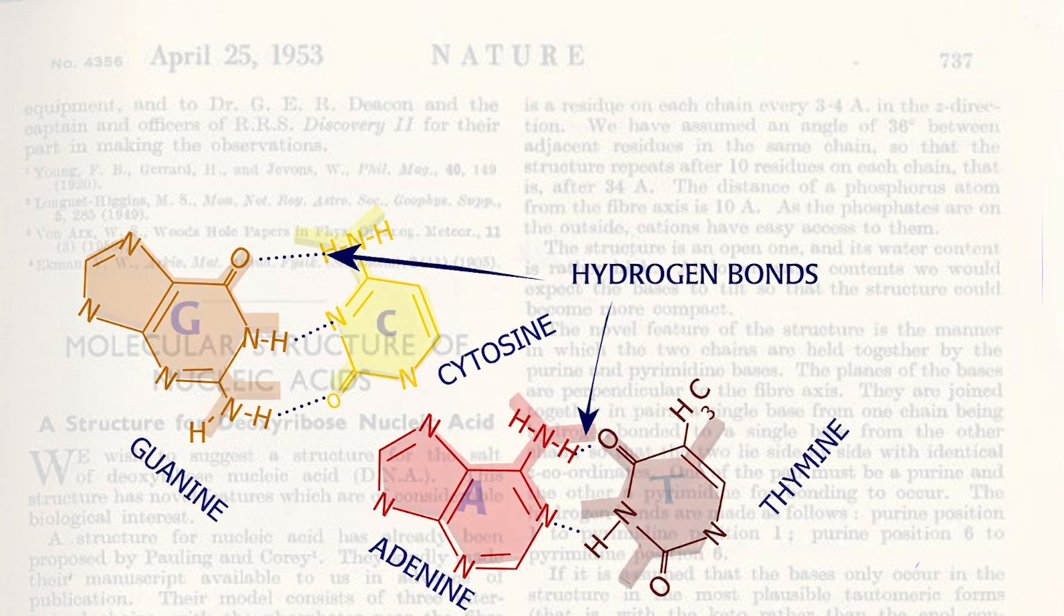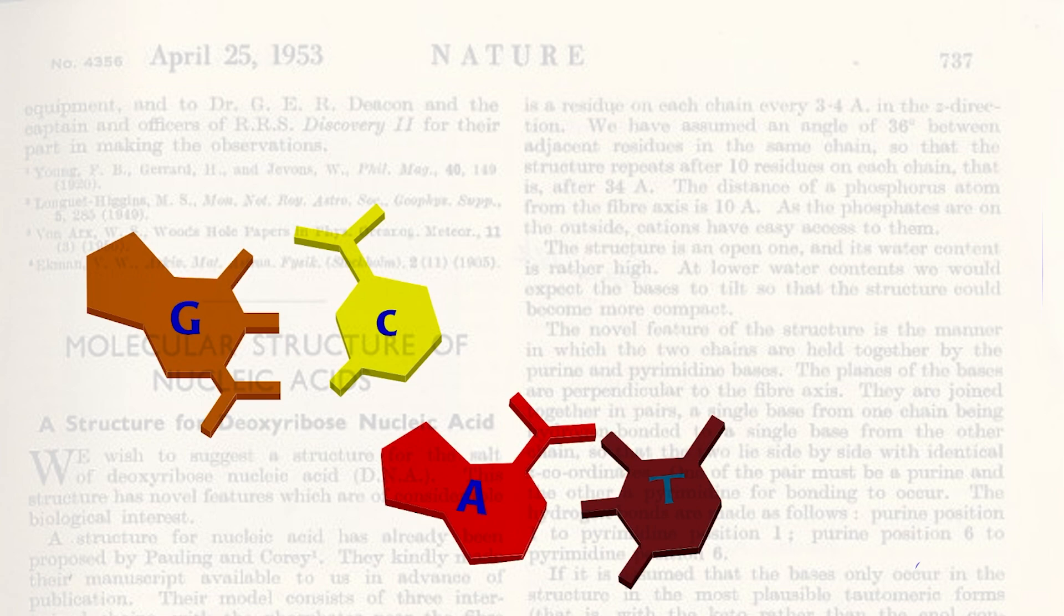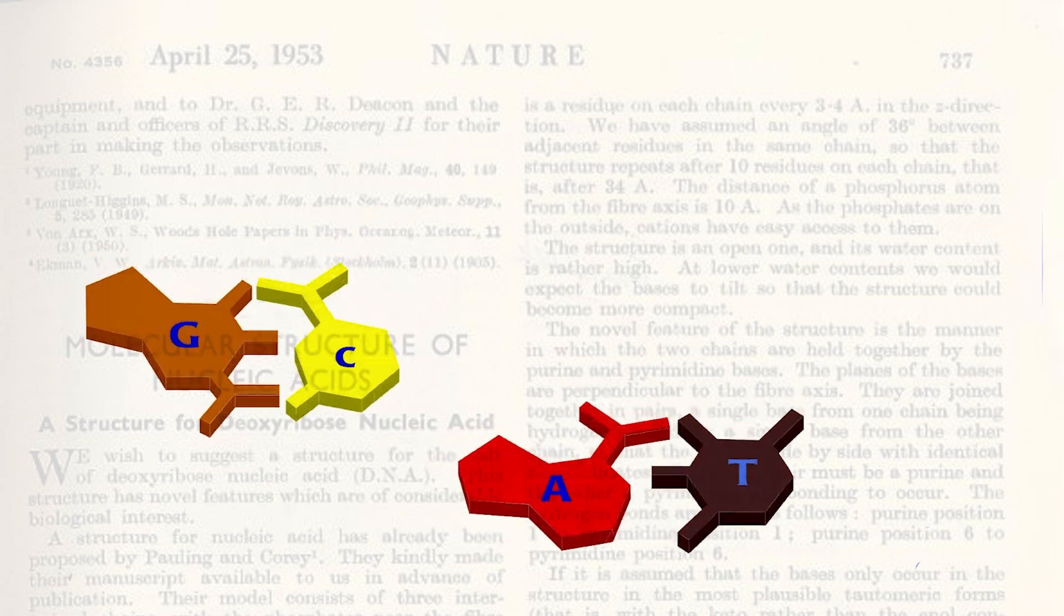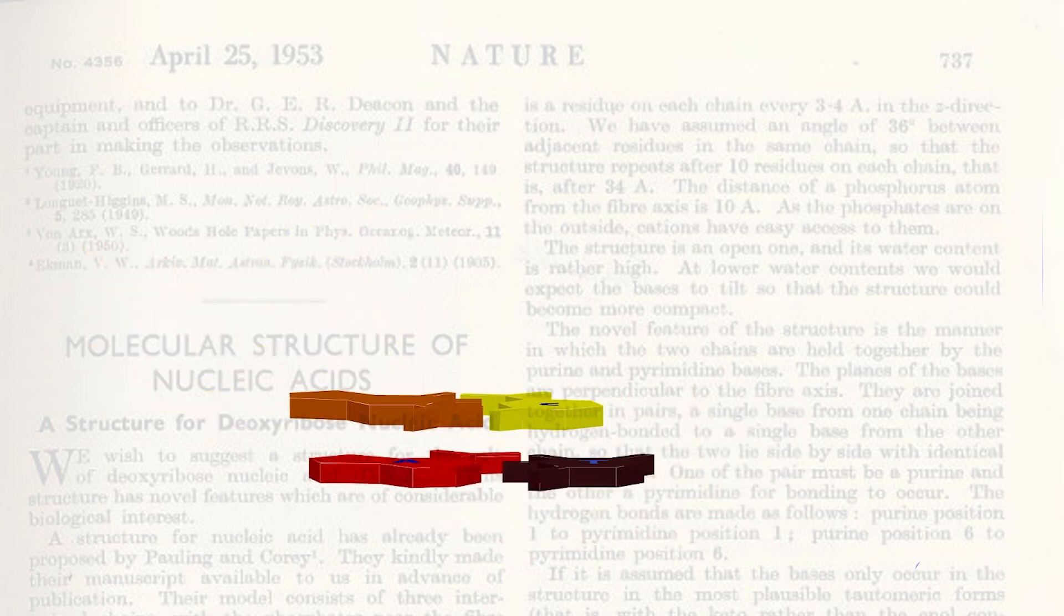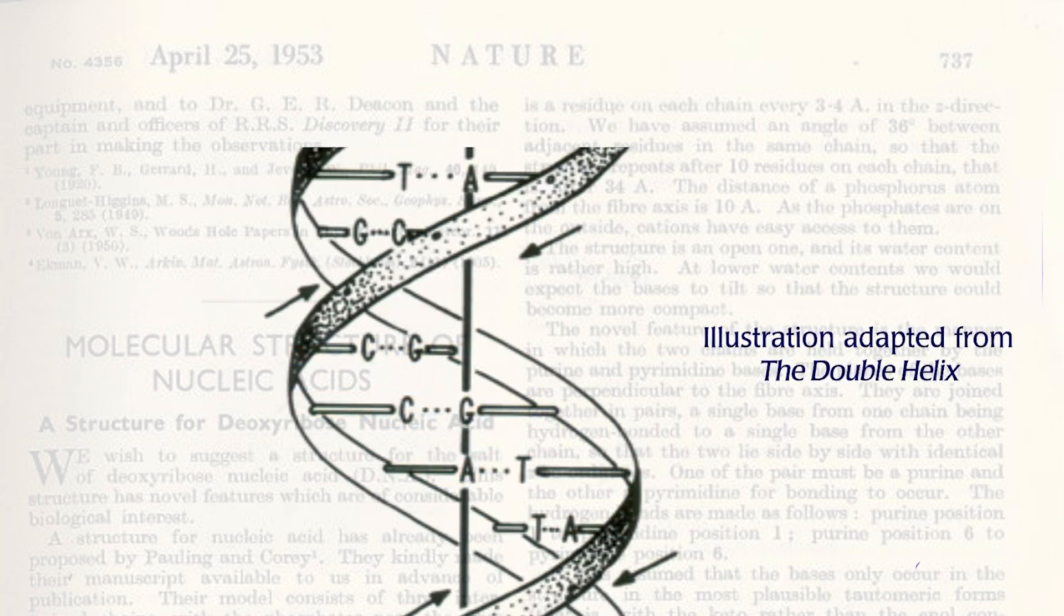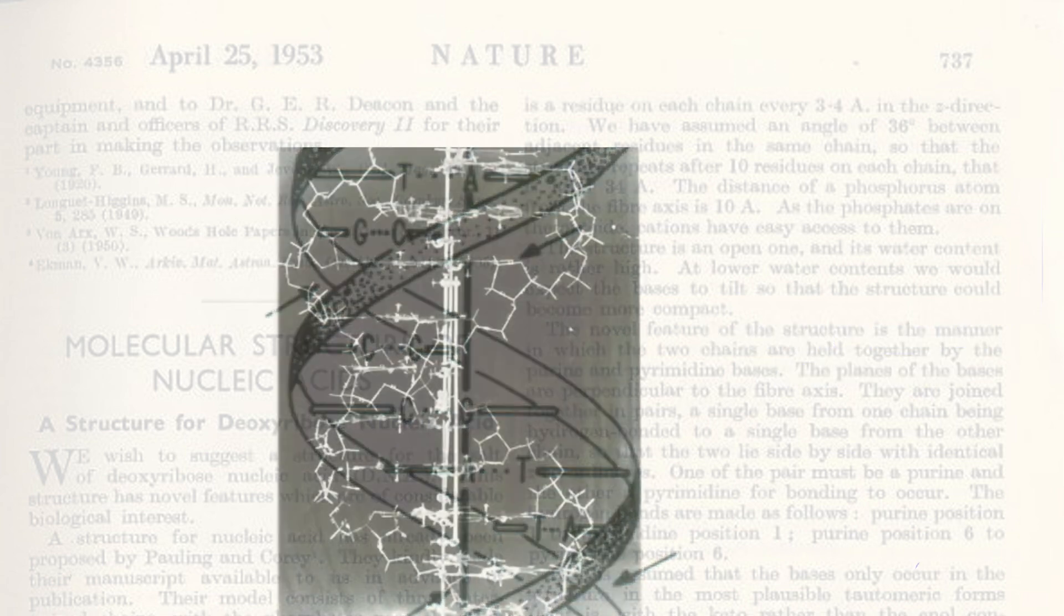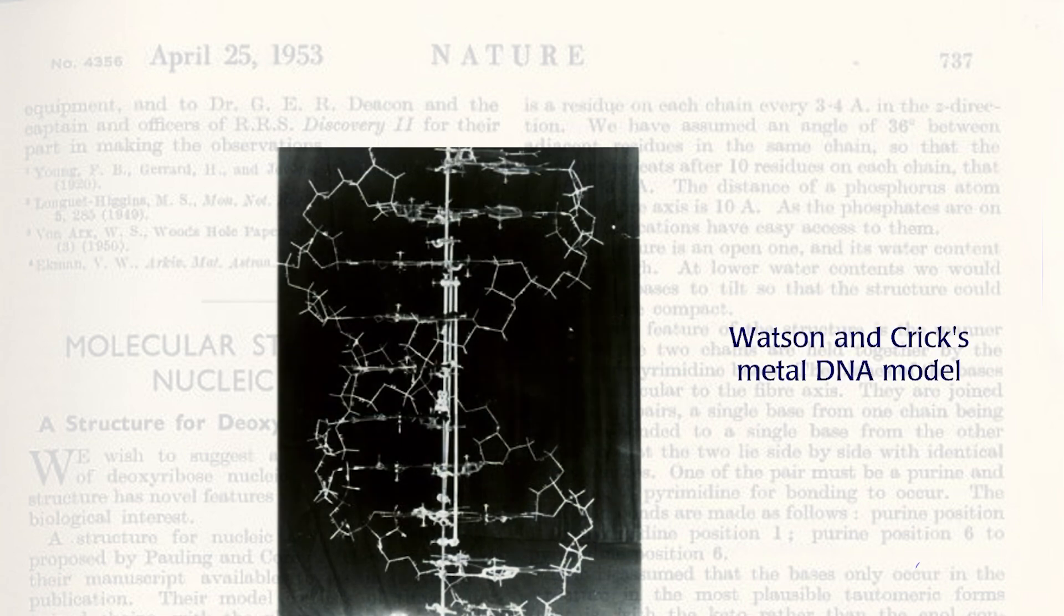Francis also pointed out that because of certain bond angles and the proximity of the base pairs, the two helices had to run in opposite directions. The helices are antiparallel to one another. Using metal scraps from the machine shop, Francis and James built a three-dimensional model of DNA. This six-foot model incorporated what was already known with James Watson's AT and GC base pairing scheme and Francis Crick's idea of antiparallel strands.